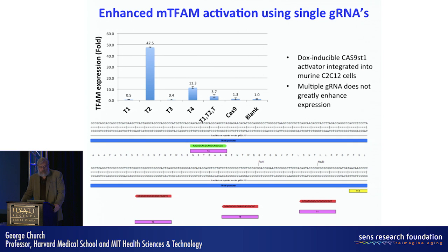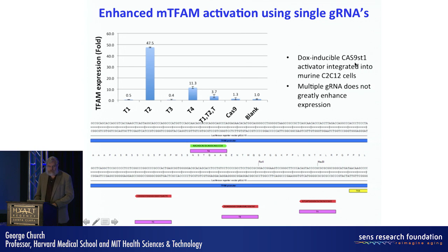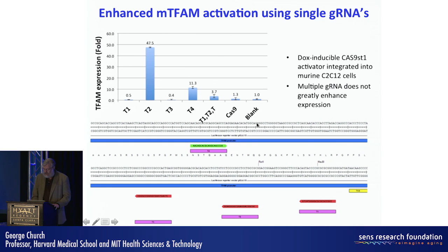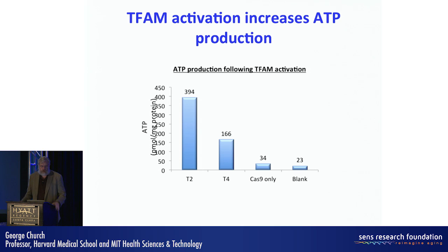These are CRISPR guide RNAs — specifically the SpCas9 ST1 type — mapped to where we put them for this experiment. You can see an activation of TFAM by up to 47-fold. Some guides are better than others, so there's reason to both computationally and empirically look for the best guide RNA. The 47-fold guide is called T2, which is the main one we'll focus on. We also use T4 as a control, as well as a no-Cas9 control.